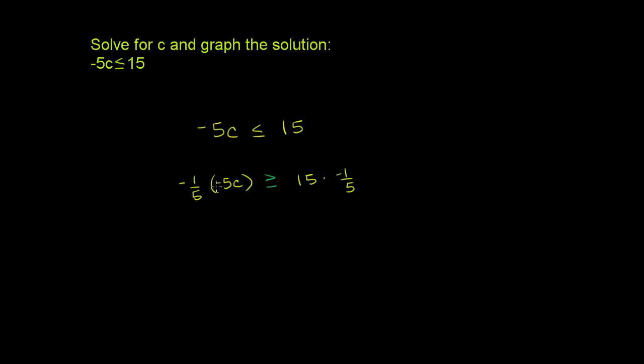So negative 1 fifth times negative 5 is 1. So the left-hand side is just going to be c is greater than or equal to 15 times negative 1 fifth. That's the same thing as 15 divided by negative 5. And so that is negative 3. So our solution is c is greater than or equal to negative 3.